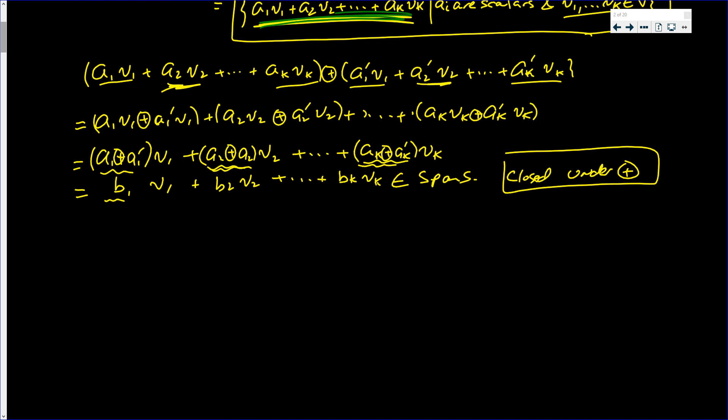Now, it has to also be closed under scalar multiplication. So I need to take an element in the span—say, this arbitrary element—and multiply it with c.